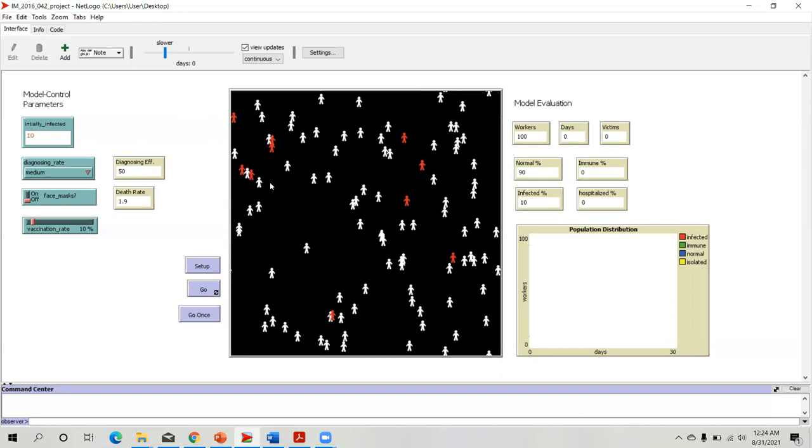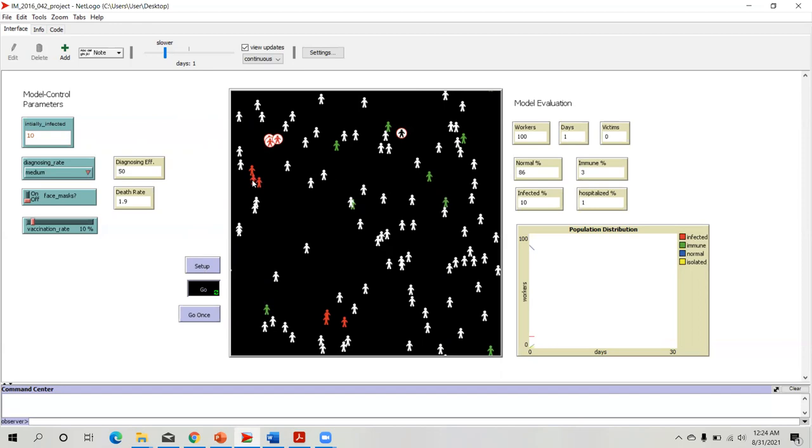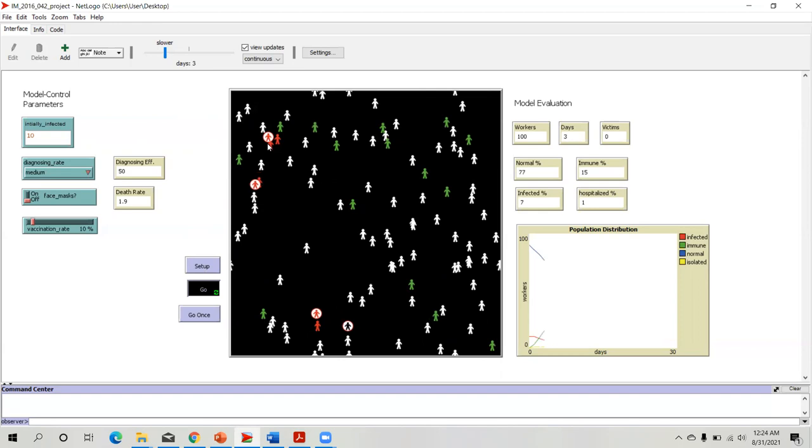When this system is set up, you can see infected people in red. When I hit the go button, you can see infected people bumping into normal people and infecting others as well. Some of them are diagnosed, that is why the red circle is being drawn on them.